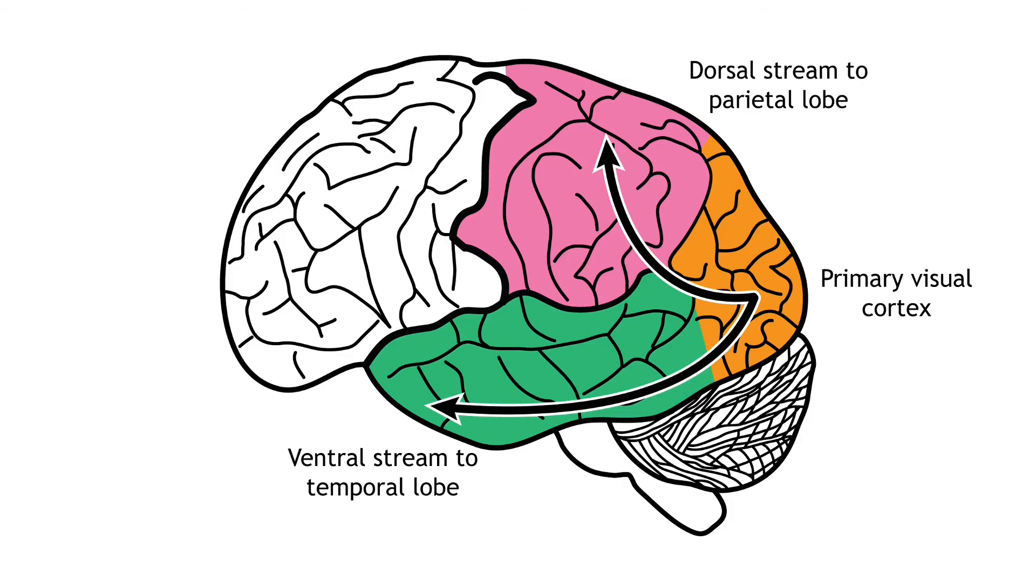Sensory system processing of input does not end upon reaching the primary sensory cortex in any sensory system. Information typically gets sent from the primary sensory cortex to other sensory association regions throughout the brain. The characteristics of sensory information becomes more complex as this higher-level processing occurs.